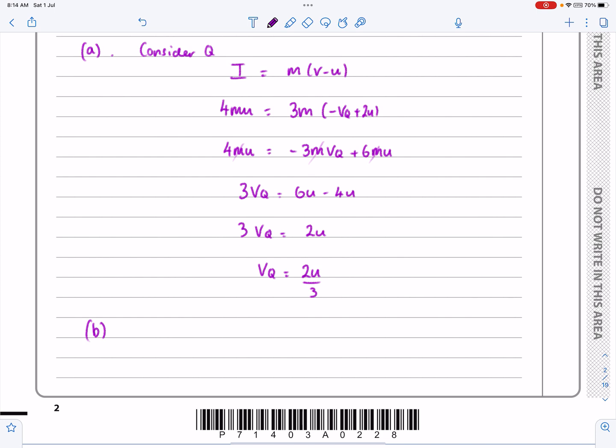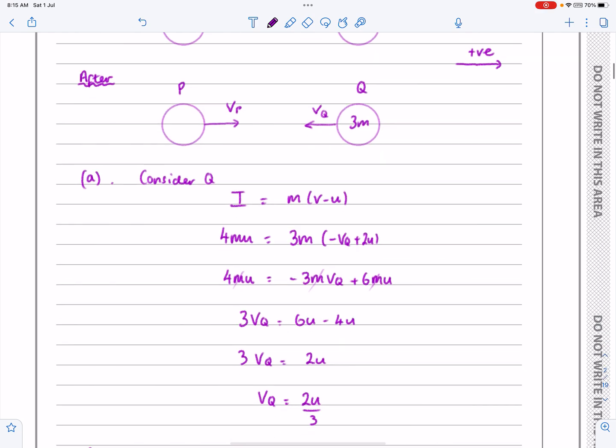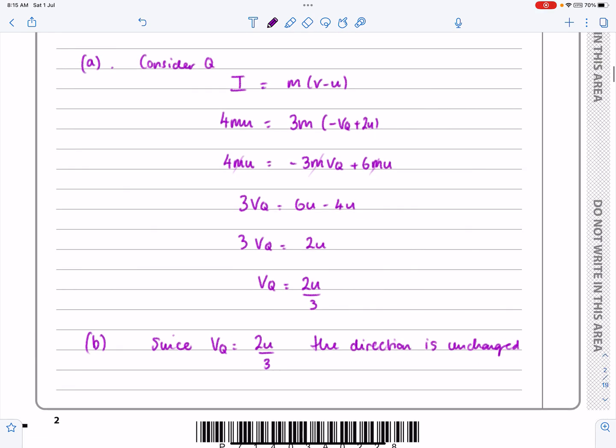and for part B, since V is equal to 2U over 3, or rather let's call it VQ as I've called it VQ previously, since that's true, the direction is unchanged or remains the same. So that was answering the second part there. Only a one mark answer, so it should be quite quick there. I've done all the work in part A. Okay, hopefully that makes sense.